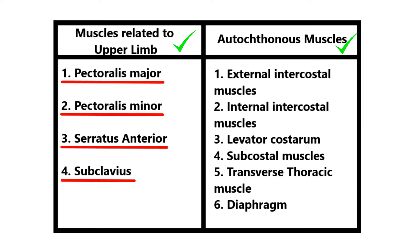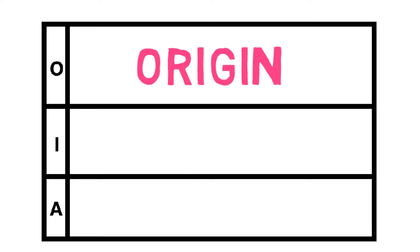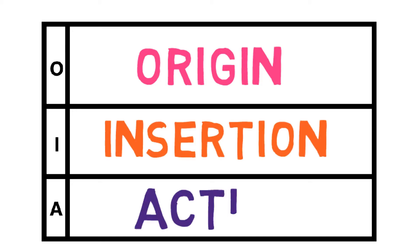The second group is autochthonous muscles, which include external intercostal muscles, internal intercostal muscles, levator costarum, subcostal muscle, transverse thoracic muscle, and the diaphragm. We will discuss each of these muscles using origin, insertion, and action in tabular form, starting with pectoralis major.